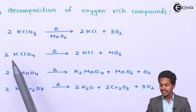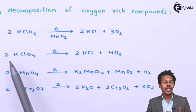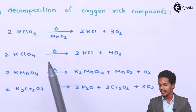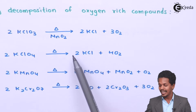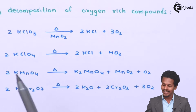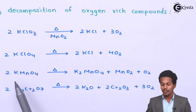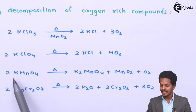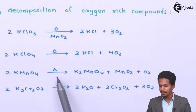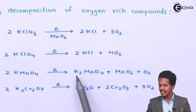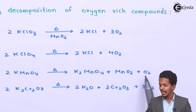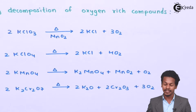If we decompose potassium perchlorate, that is 2 moles of KClO4, we also get 2 moles of KCl along with 4 moles of O2. And for the next reaction, the oxidizing agent KMnO4: 2 moles of KMnO4, when decomposed, forms K2MnO4 along with MnO2 and oxygen as a byproduct.